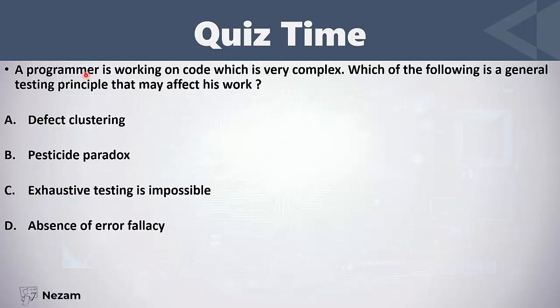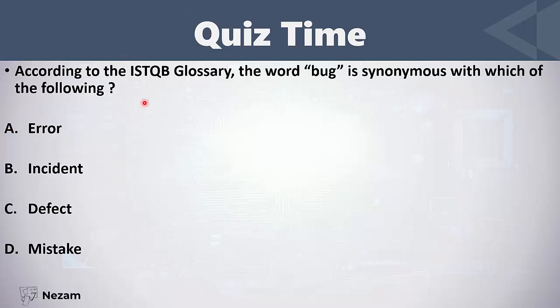A programmer is working on very complex code. Which general testing principle may affect his work? The options are defect clustering, pesticide paradox, exhaustive testing is impossible, or absence of error policy. Since the code is very complex and it is impossible to cover all modules, using defect clustering the programmer can identify which modules are responsible for the most defects or highest risk, and guide testing toward those clusters.